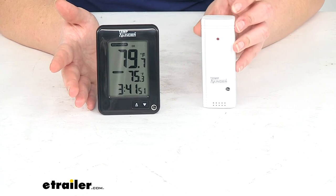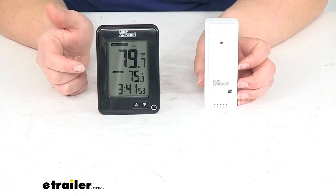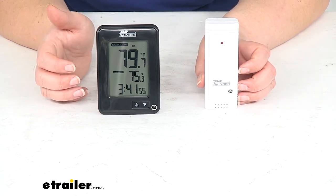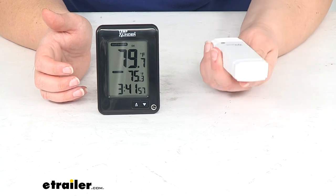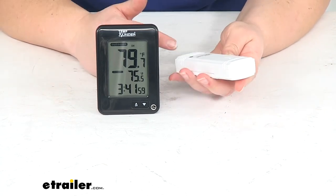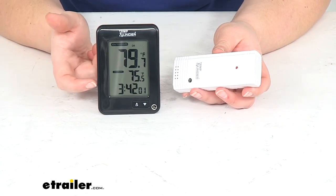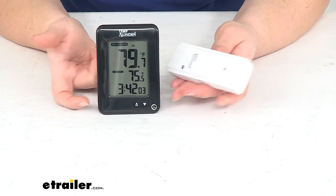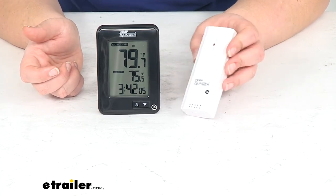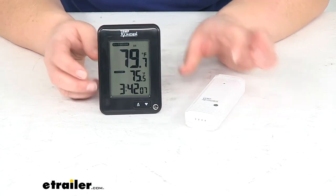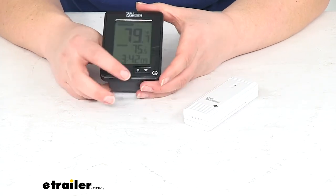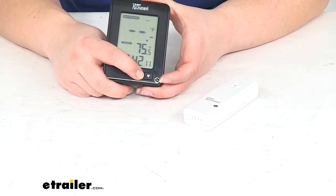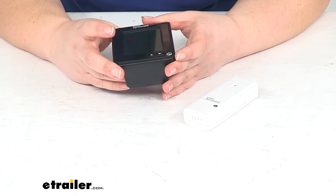The distance you can move the remote and it will still work is up to 165 feet. If you want, you can also use a couple other sensors with this, up to three total. You can just cycle through those to read from the different slots.